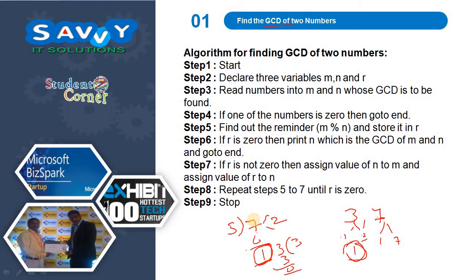Always, the divisor is changing repeatedly. In the algorithm, the first step is start and the last step is stop. These two are common for us. Next, we need to declare two variables, M and N for finding the GCD of two numbers. The two numbers are M and N. And keep in mind finding the remainder, so we also need to take one more variable. Next, read numbers into M and N whose GCD is to be found.